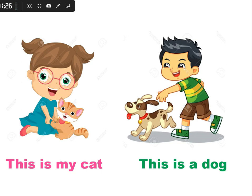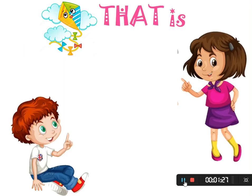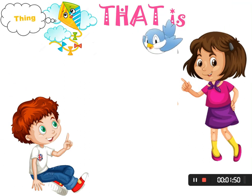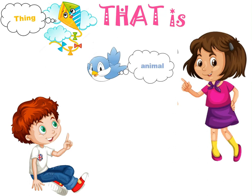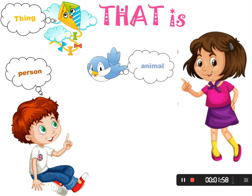How about 'that'? تعالوا نشوف 'that'. We use the word 'that' to point out a single thing, animal, or person — but it is not near us. بيكون بعيد. يبقى أنا بستخدم 'that' علشان أشاور عن شيء أو حيوان أو إنسان بيكون مفرد وبعيد عني — مش بقدر أطوله.